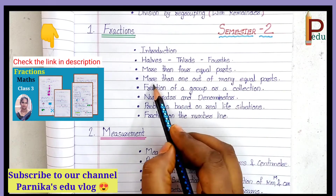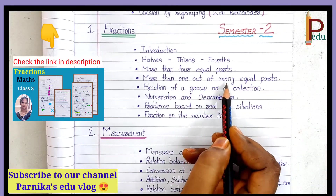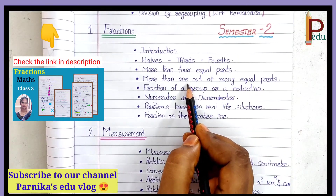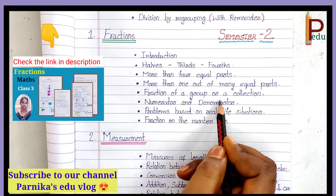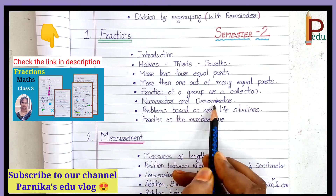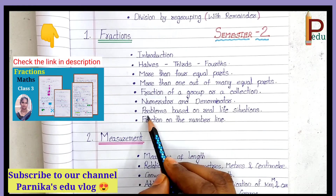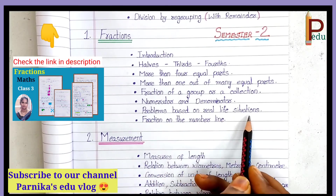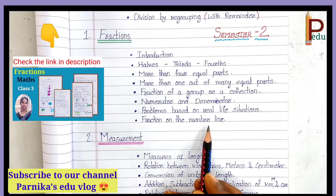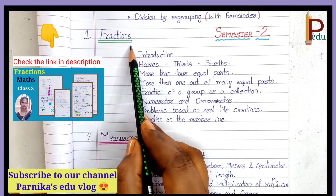Next, More Than One Out of Many Equal Parts — for each part we write it in fraction form. Next, Fraction of a Group or a Collection. Next, Numerator and Denominator — the numerator and denominator of a fraction. Next, Problems based on real life situations — word problems on fractions. Next, Fraction on a Number Line — representing fractions on a number line. This is about the Fractions chapter.